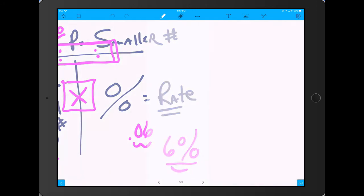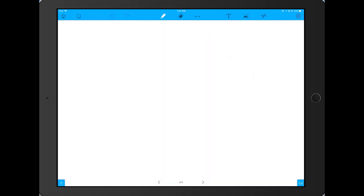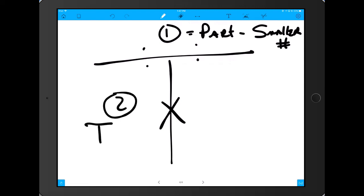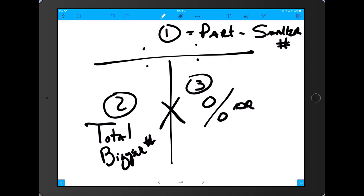So I just want to remind you that this T formula is very important for you to remember. Always draw this out. Always put your mathematical symbols. Remember that on top is part, or remember the smaller number. Number two down here is your total, and we're going to think or look for the bigger number. And the third slot is our percentage or rate.